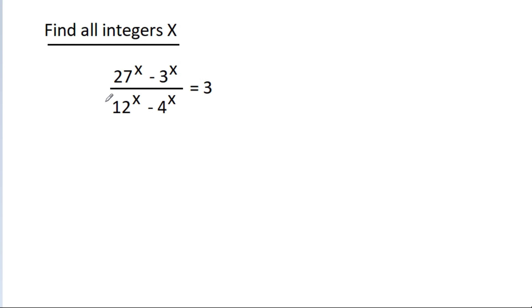In this video, we have given that (27^x - 3^x) / (20^x - 4^x) is equal to 3. Then we have to find integer x.